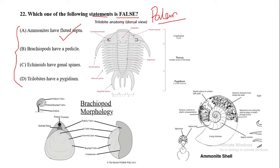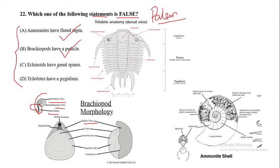Next, brachiopods have a pedicle. In the image, you can see the pedicle valve of the brachiopod, along with the brachial valve and pedicle. So brachiopods do have a pedicle — this is also a true statement.